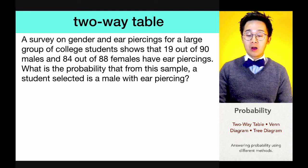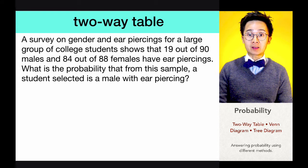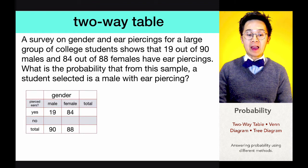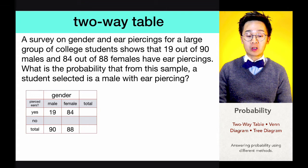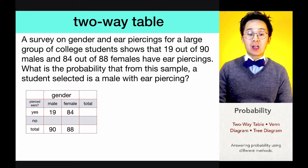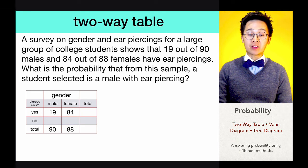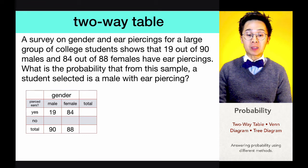We have two variables in this experiment: gender and ear piercing. So we have male and female students, and whether they have ear piercings or no ear piercings. From the given data, we know that 19 out of 90 males have ear piercings, and 84 out of 88 females have ear piercings.